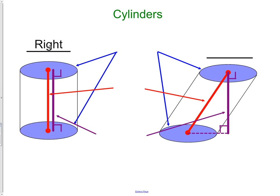We have two types of cylinders: the right cylinder and the oblique cylinder. Just like we had the right and oblique pyramids, we have the same thing with cylinders.